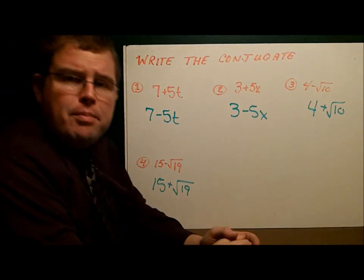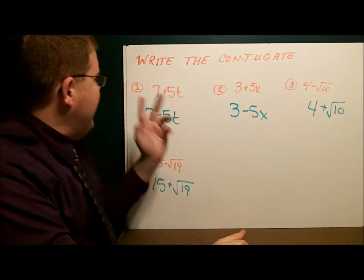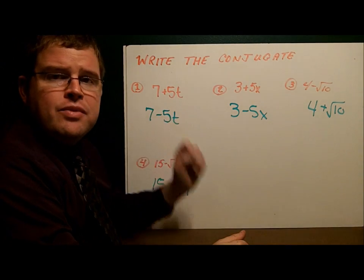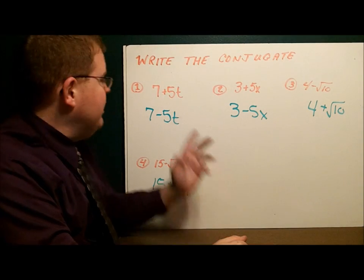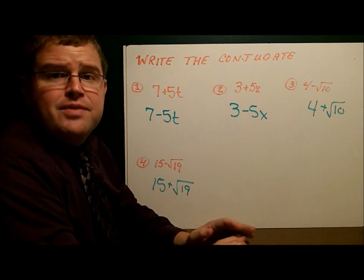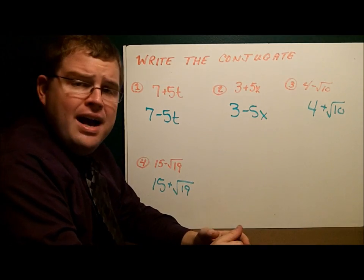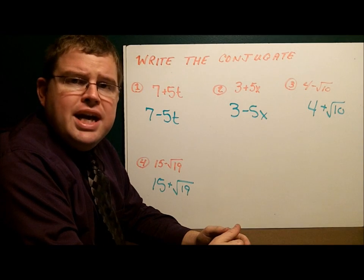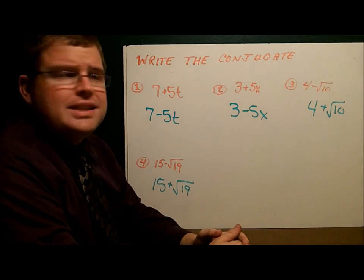Let's begin by practicing how to write conjugates. Here we have 7 plus 5t. The conjugate has the same numbers but a changed operation, so it becomes 7 minus 5t. Next, 3 plus 5x — same numbers, change the operation — so the conjugate is 3 minus 5x.